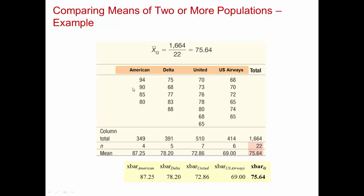The column means, or group means, are calculated by summing each column and dividing by the column's n. The x-bar for American is 87.25, Delta is 78.20, United is 72.86, and US Airways is 69. The grand mean is found by summing all observations across all groups and dividing by the total n of 22, giving us a grand mean of 75.64. Now that we have group means and the grand mean, we can compute the deviations needed for our sums of squares.